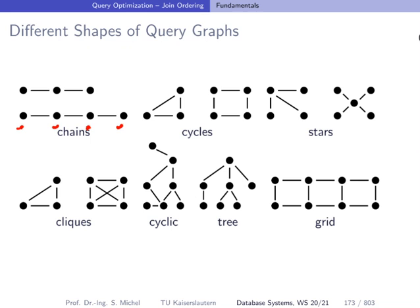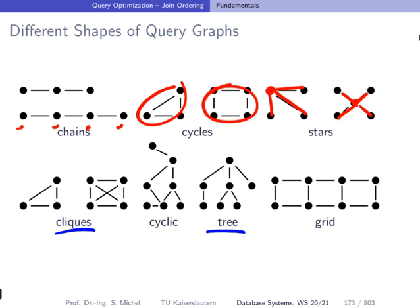Query graphs can also take the form of cycles, stars, or cliques. In a clique, all nodes are joinable with each other, so there is no difference between allowing cross products or not. Query graphs can also be trees or cyclic graphs and grids. We will see later that depending on the query graph shape, specific algorithms can be applied and we can count how many possible join plans exist.